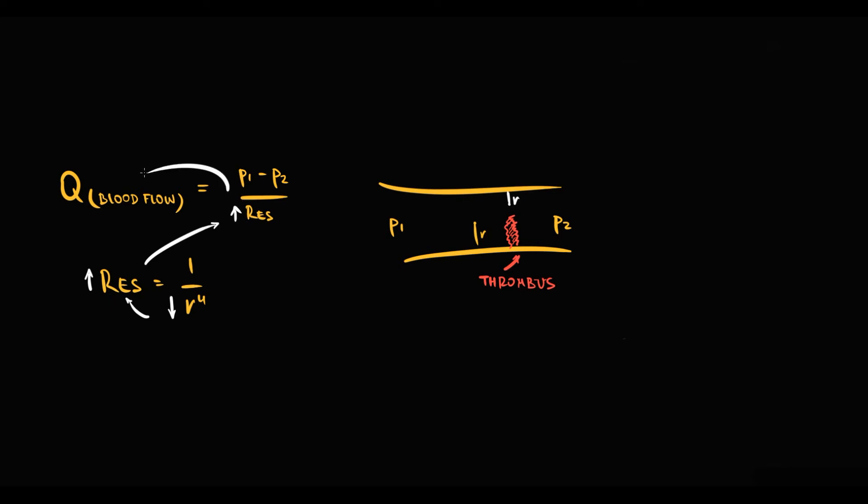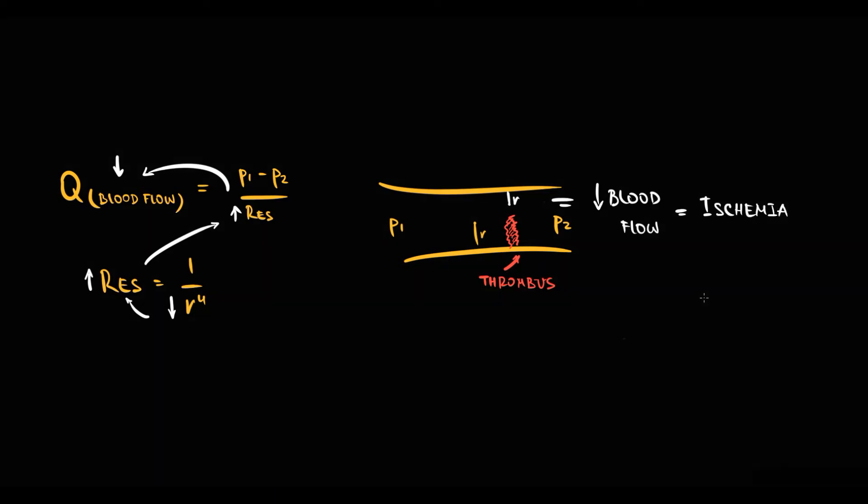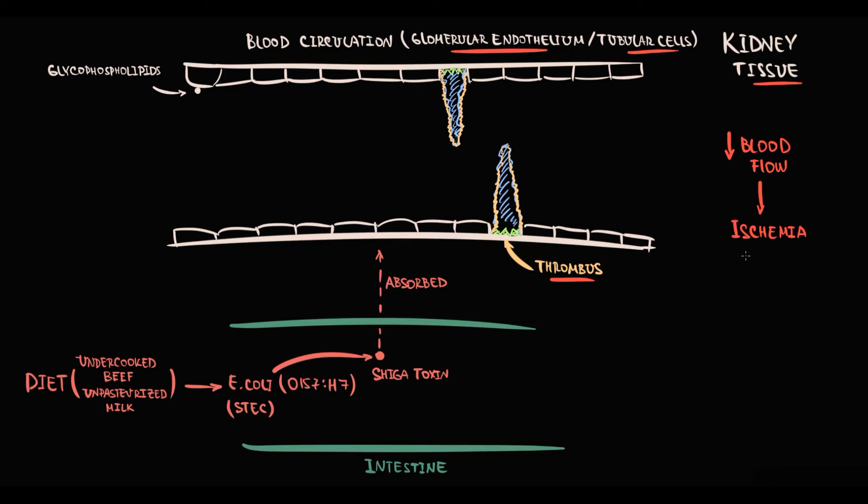With increased resistance, blood flow decreases. With decreased blood flow, oxygen and nutrient delivery decreases, so ischemia develops. Severe ischemia, simultaneously with severe damage to endothelial cells of the glomerulus, causes glomerular necrosis.